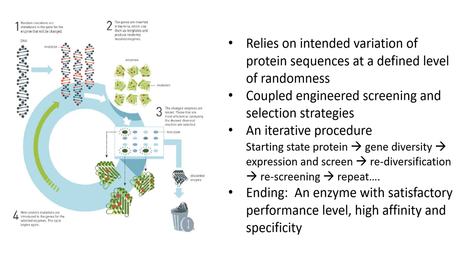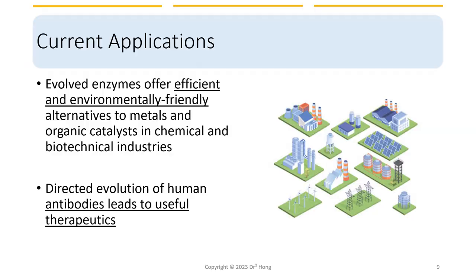Ultimately, the process produces a functional protein with satisfactory performance that can bind to the substrate or target very tightly with high affinity and very specifically with high specificity. Directed enzyme evolution is used to improve the efficiency and selectivity of enzymes, and used as environmentally friendly alternatives to metals and organic catalysts in industrial processes, such as the production of pharmaceuticals, chemicals, and biofuels. It is also used to develop leads that can be used as therapeutics.